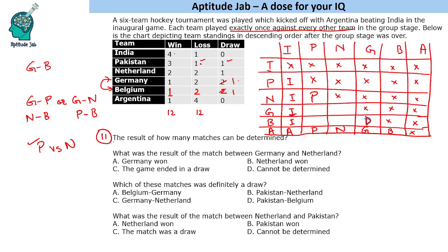Out of 15 matches we can find the result of 11 matches. The result of the match between Germany and Netherland cannot be determined — it's either a draw or Germany lost to Netherland. Belgium versus Germany is definitely a draw. For Netherland versus Pakistan, Pakistan is the winner of that match. That is the solution to this set.